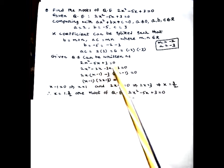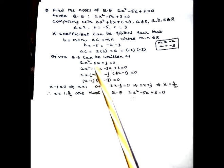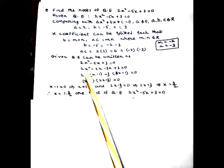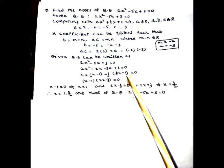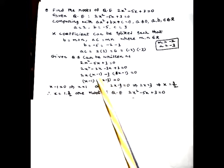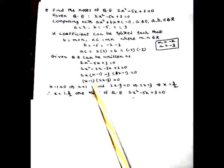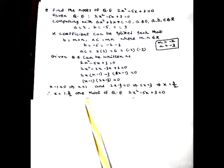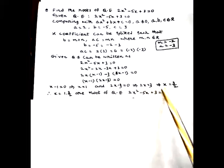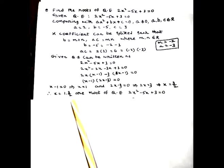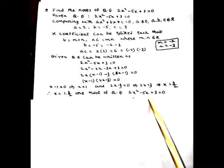2x² - 5x + 3 = 0. The middle term -5x is written as -2x - 3x. Considering 2x² - 2x and taking 2x as common factor, we get 2x(x - 1). Considering -3x + 3 and taking -3 as common factor, we get -3(x - 1). Since (x - 1) is the common factor, we write (x - 1)(2x - 3) = 0, giving x = 1 and x = 3/2.